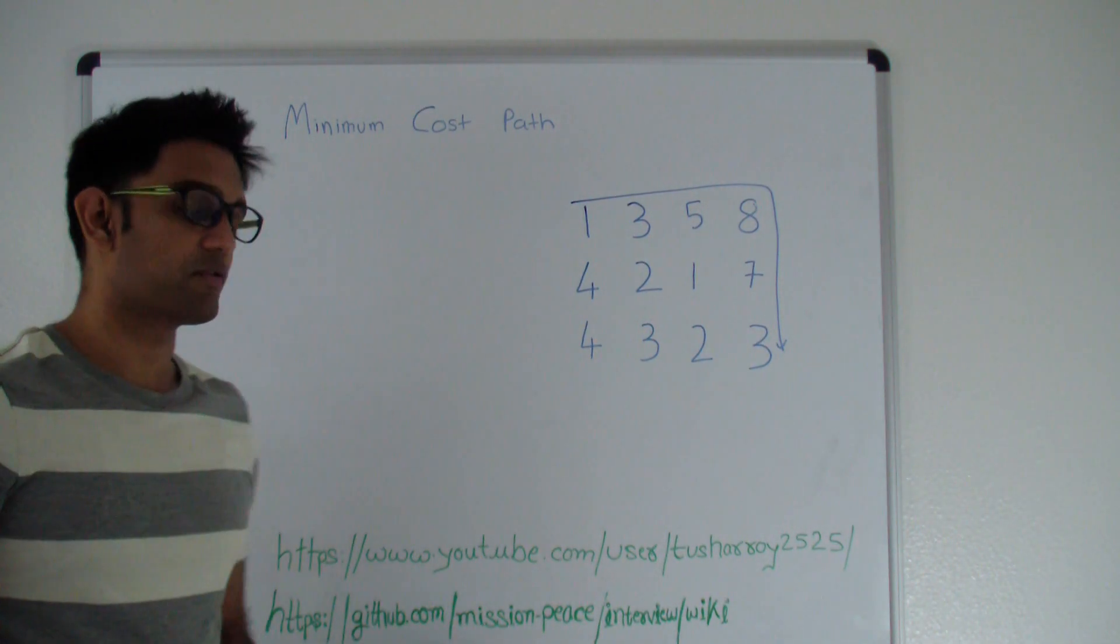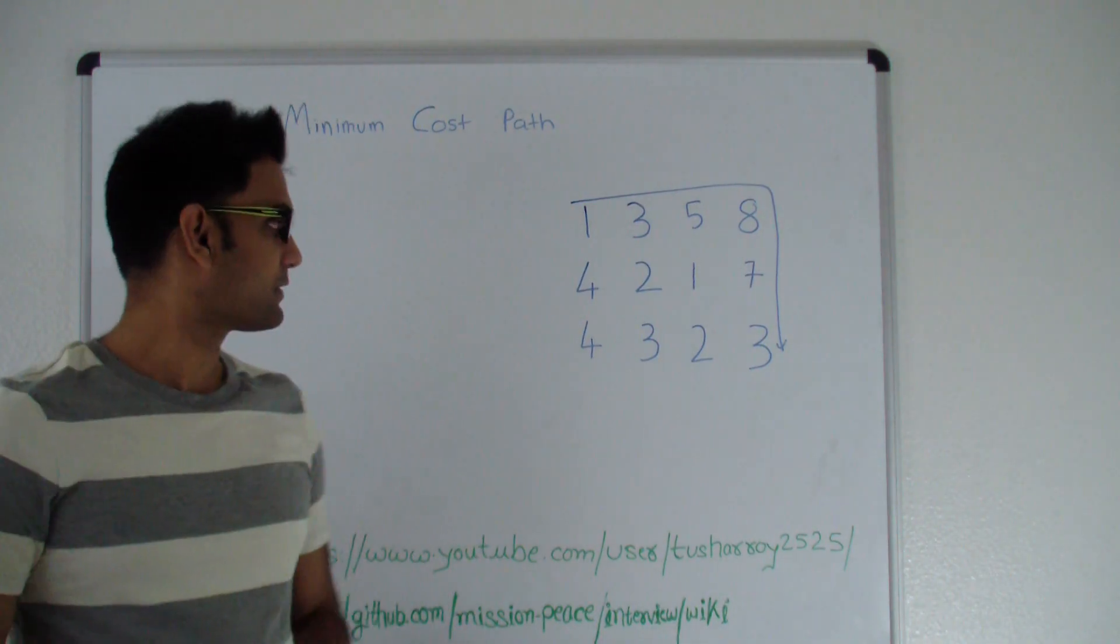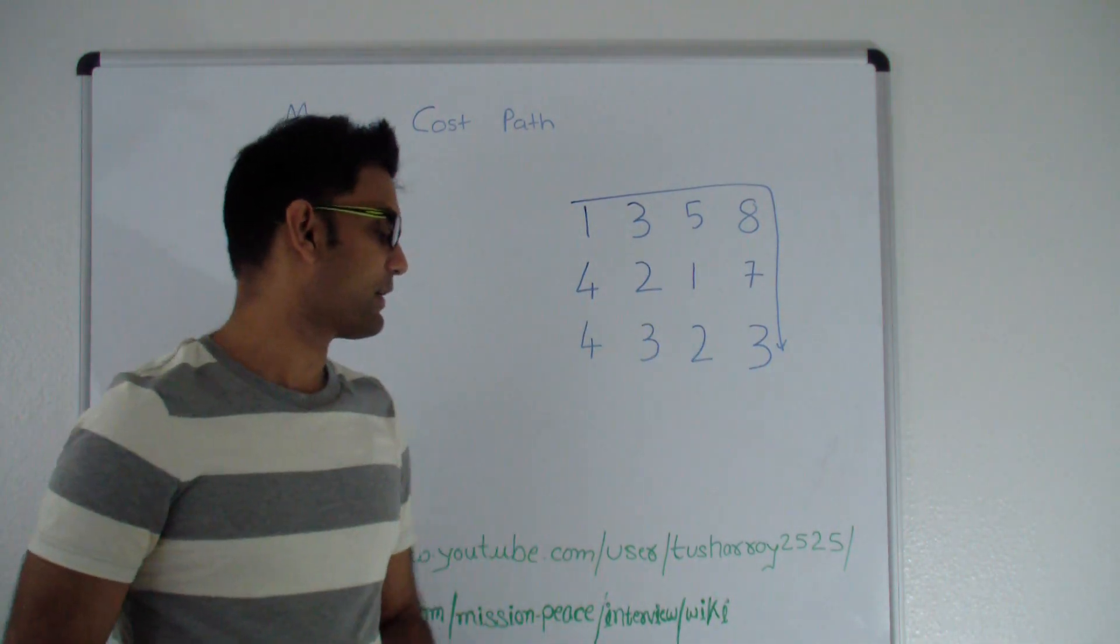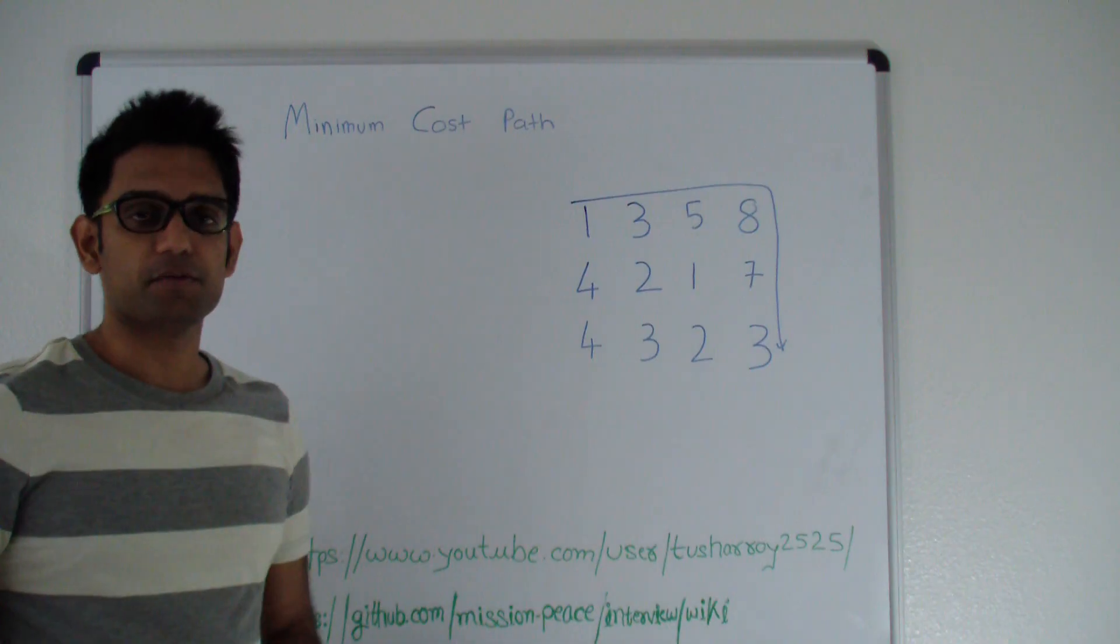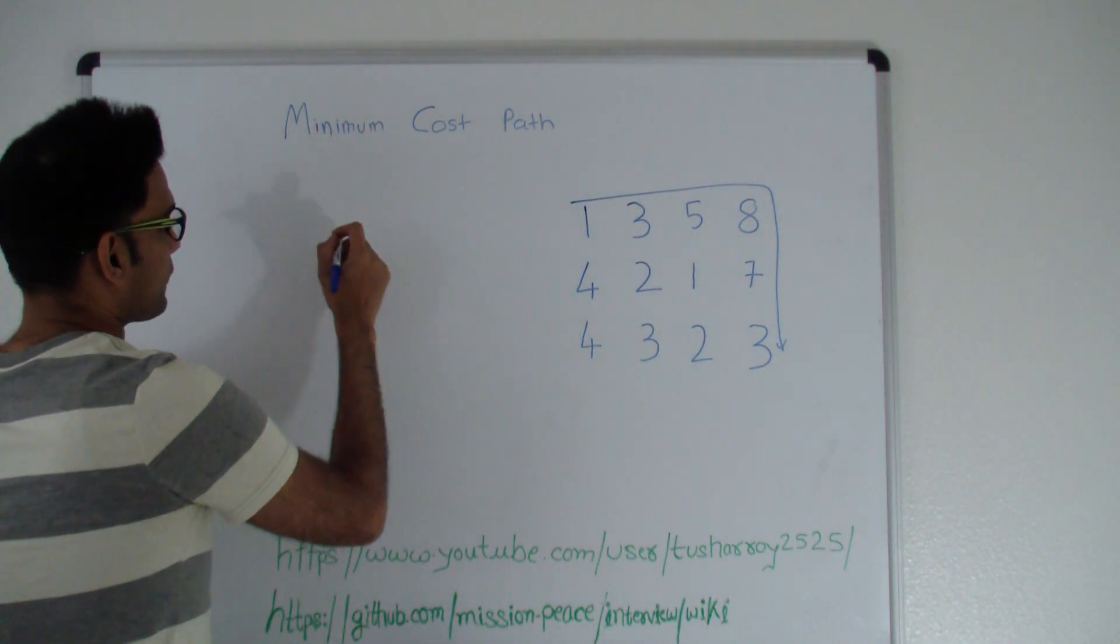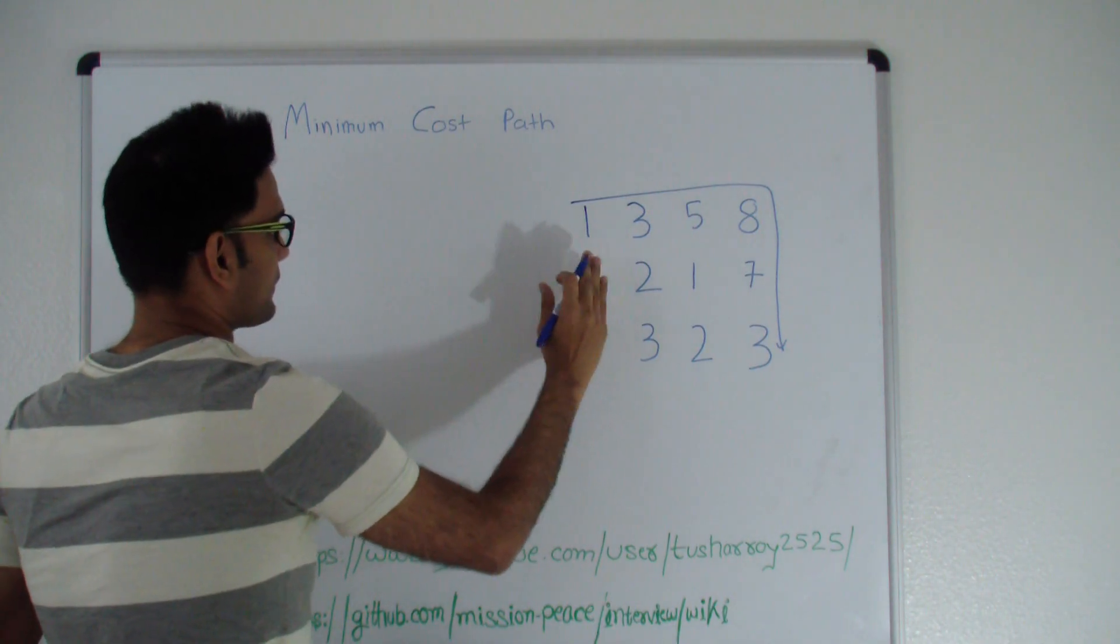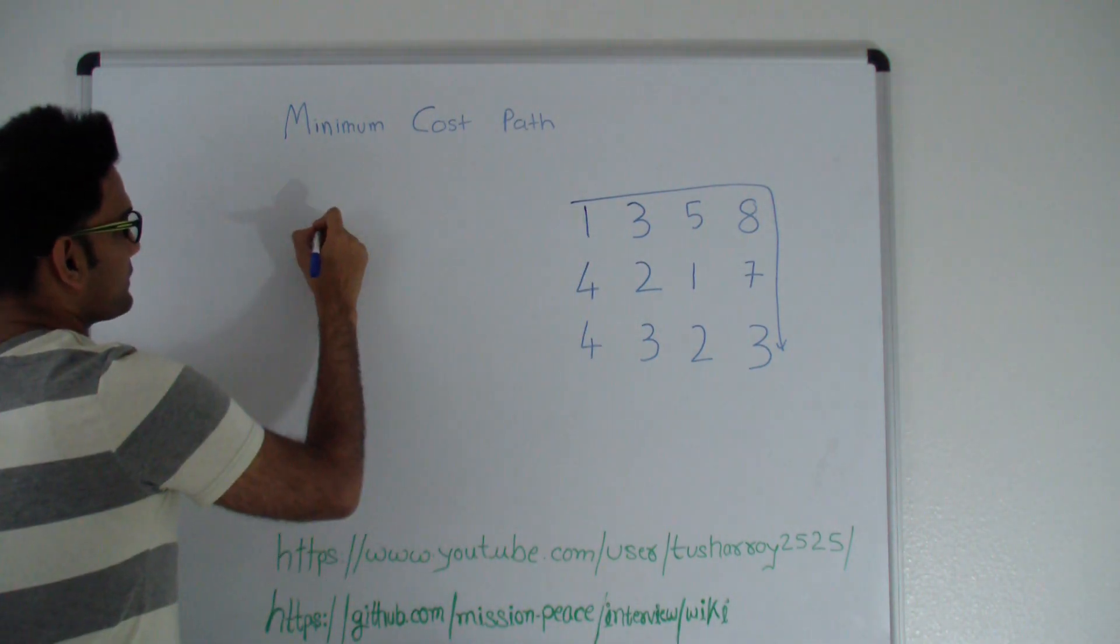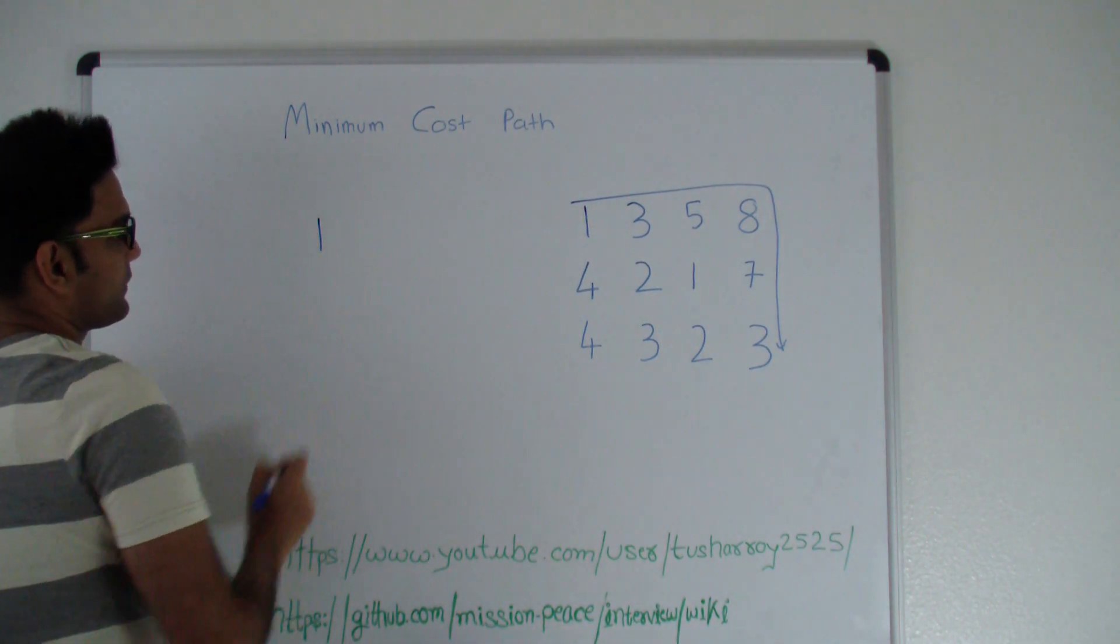So the question is to find the minimum cost path from the top left to bottom right. We'll use dynamic programming to solve this particular question. Let's take a temporary matrix of same size and we'll just put 1 here for the first point.